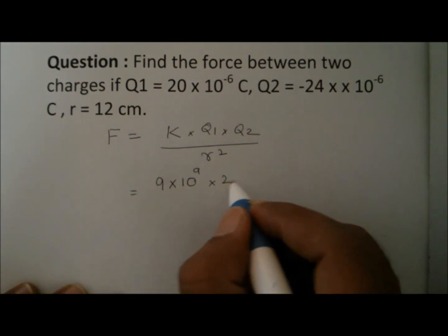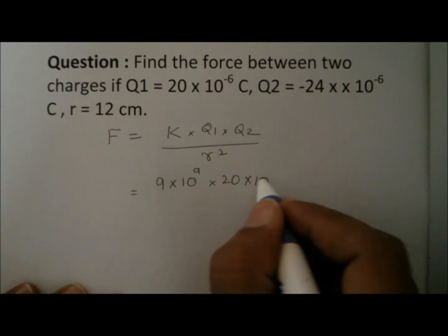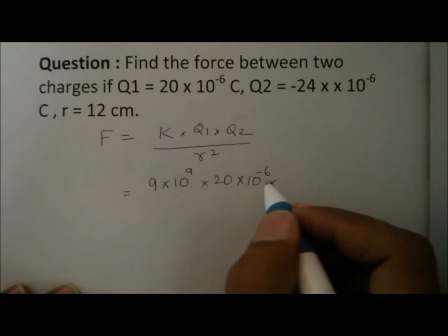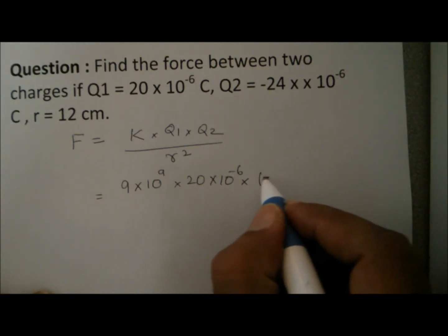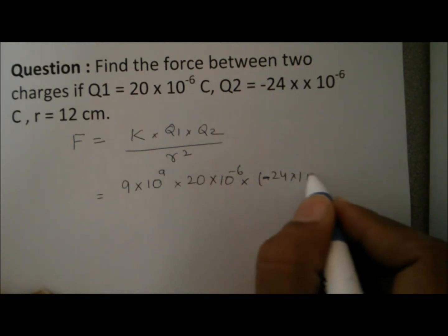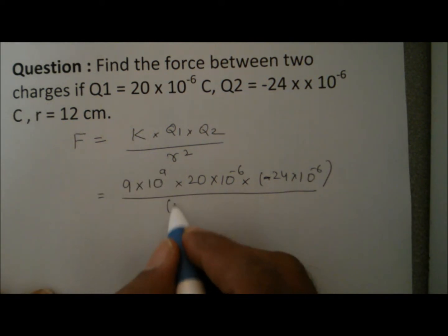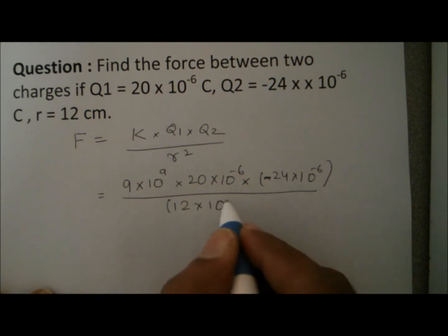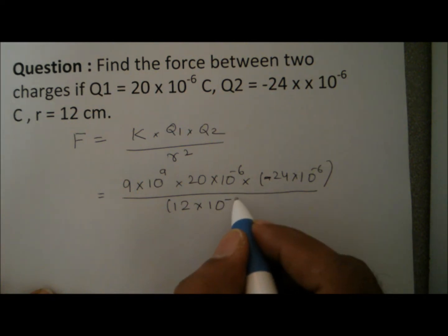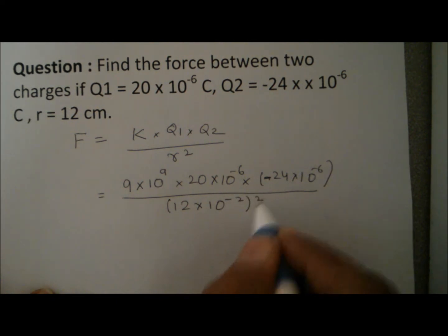Q1 is 20 into 10 to the power minus 6. Q2 is minus 24 into 10 to the power minus 6 divided by the radius which is 12 centimeters. We are going to convert it into meters. This is 12 into 10 to the power minus 2, whole thing squared.